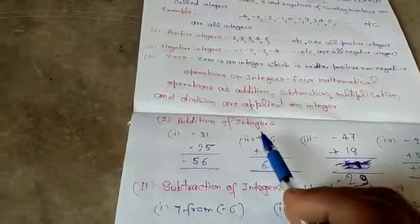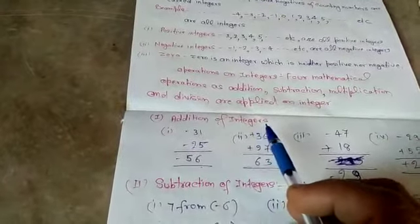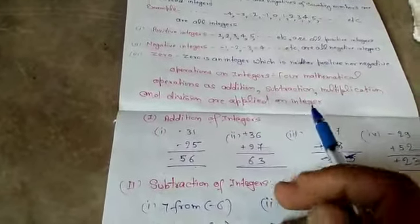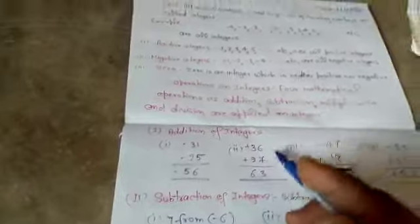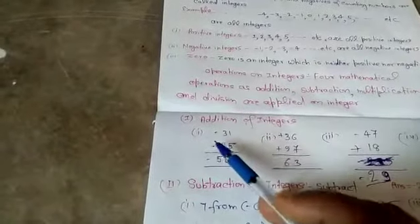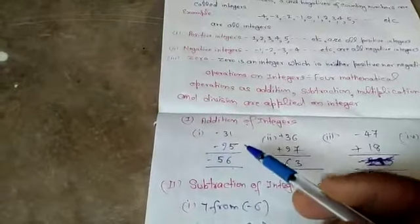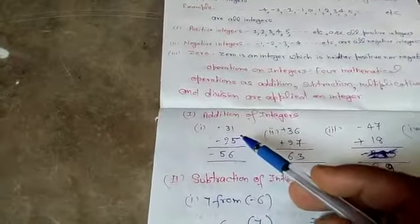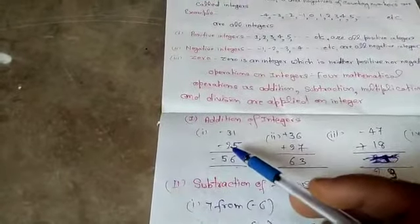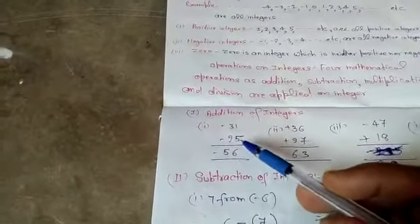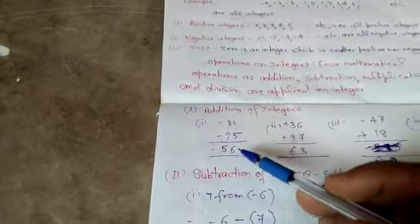Addition of integers. Taking some examples. First example, addition of two negative integers. Please see. Minus 31 plus minus 25. Adding this, we have minus 56.